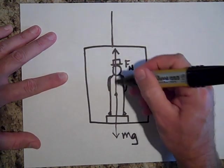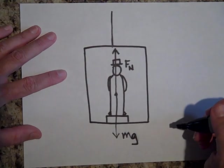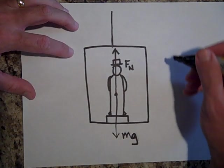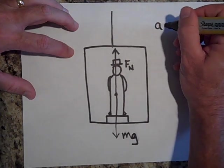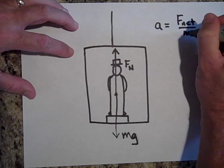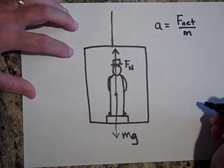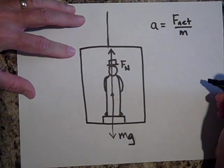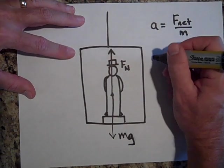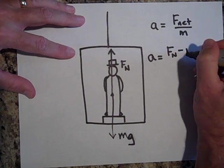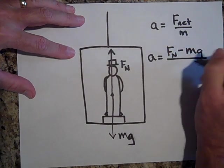The way the person accelerates upward is they have a net force on them. So if we want to find the acceleration of the elevator what we do is we say a equals F net over m. If the normal force is bigger than mg then the person will accelerate upward, so a equals F_n minus mg all over m.